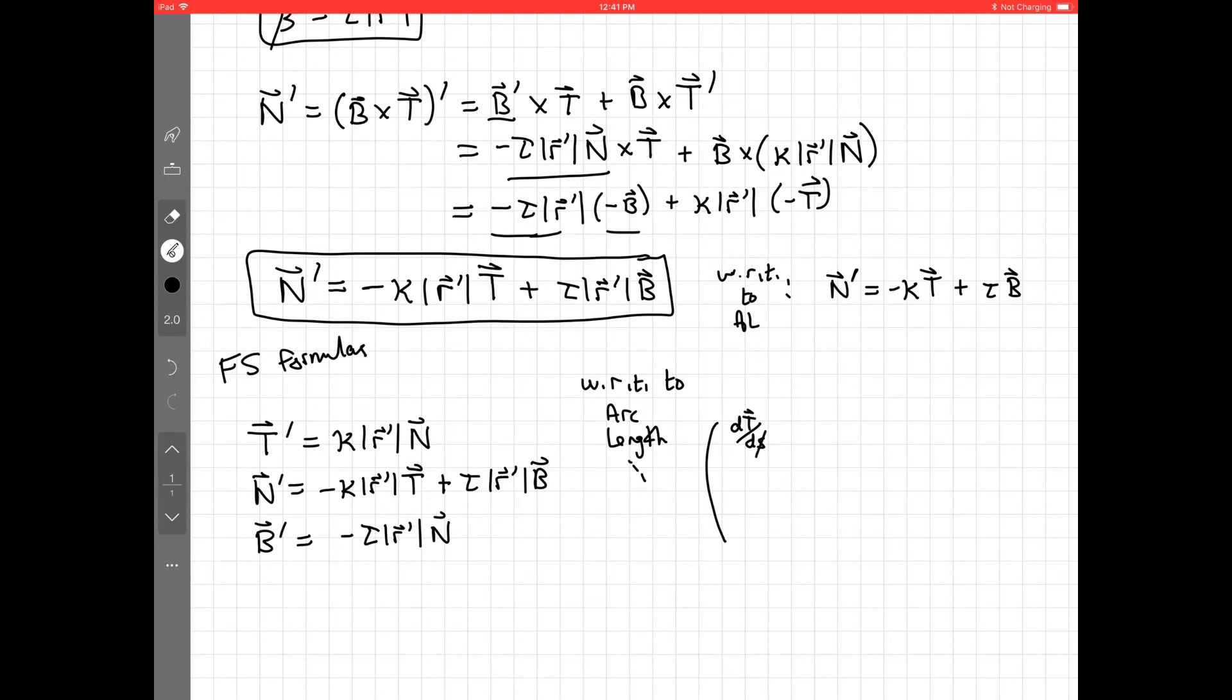If we're familiar with that. dT/ds, dn/ds, db/ds, right? This is the derivative of the TNB frame with respect to arc length. It has this nice form.